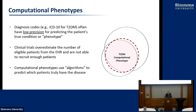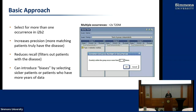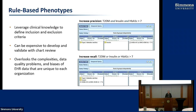For many years, people have been talking about computational phenotypes, which use algorithms to predict which patients truly have disease. We've had a very simple algorithm inside of i2b2 from the very beginning: looking for multiple occurrences. If the patient has two or more instances of type 2 diabetes in their chart, it's more likely they really have diabetes than if they only have one occurrence. It increases precision, but it reduces recall, and it can also introduce biases by selecting sicker patients who come many times to your institution.